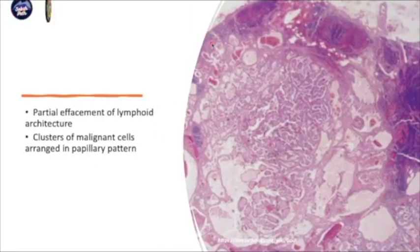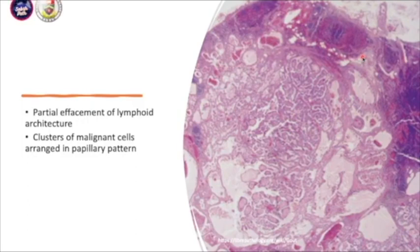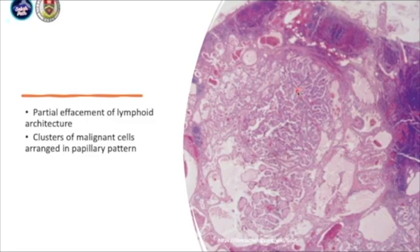When we process it through histological slides, the histopathological examination reveals a partial effacement of lymphoid architecture. Even though the gross appearance is almost replacing all of the lymphoid tissue, microscopically they will have a bit of normal residual lymphoid tissue, as you can see in this region. And you can see there's a cluster of malignant cells arranged in papillary pattern.